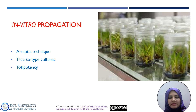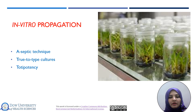The basic principle of in vitro propagation is the phenomenon of totipotency. Totipotency means the ability of every part or single cell of the plant to produce or regenerate into a complete plant.